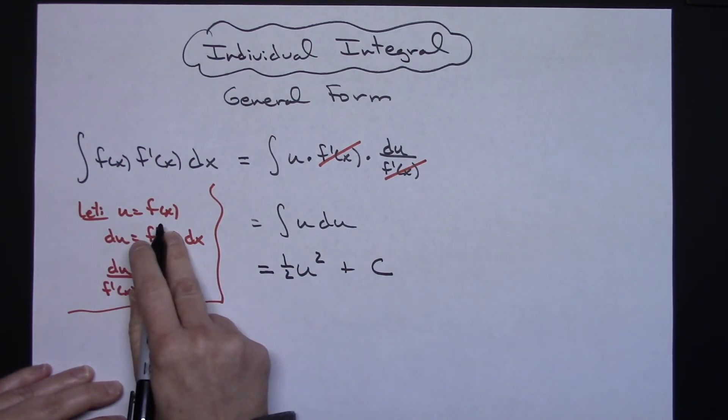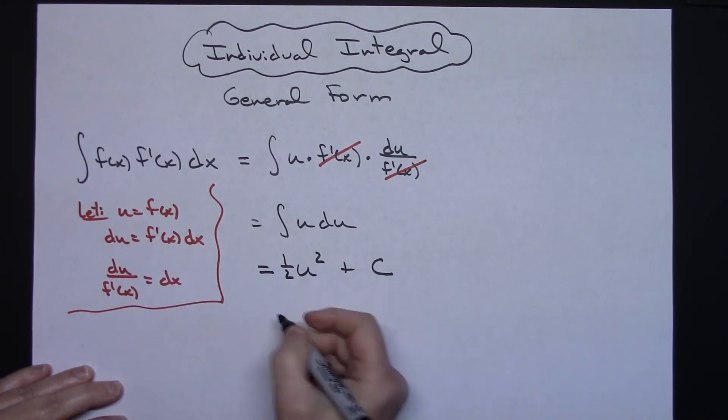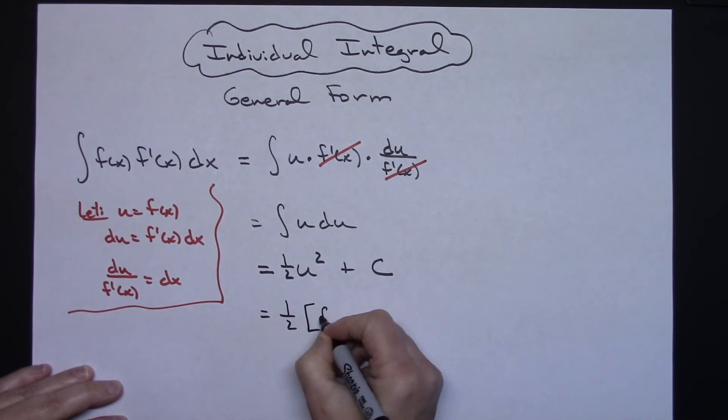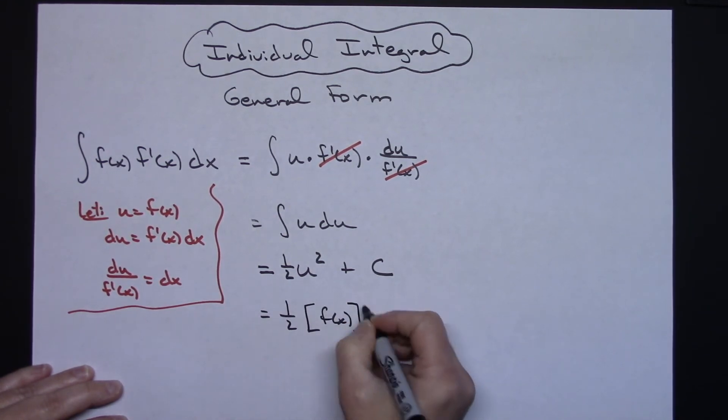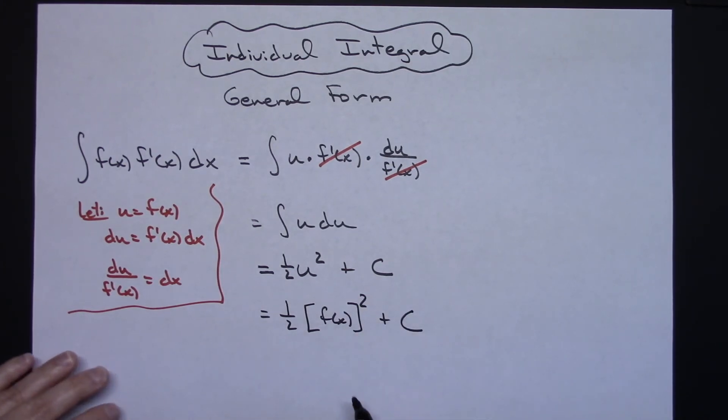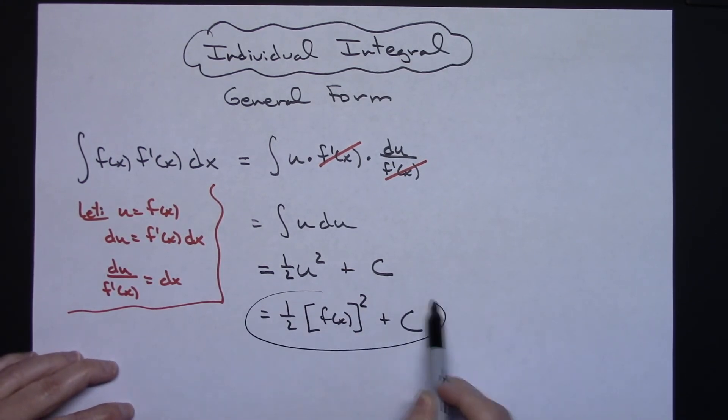Replacing u with what I equaled there at the beginning of f of x, then I'll have one half times f of x quantity squared plus C. So just kind of like a general form or a symbolic way to do an integral.